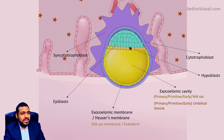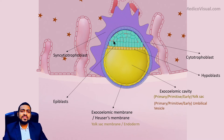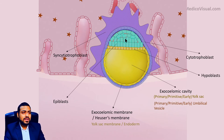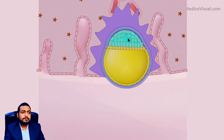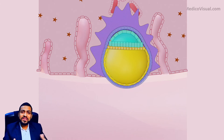Now, as the hypoblasts have got their own personalized cavity, the epiblasts will also want their own cavity. The epiblast cells in the center will start dying — they will undergo apoptosis — and a new cavity will be formed. Some cells die for a cavity, like others die for their country or religion — here these epiblast cells are dying for a cavity.